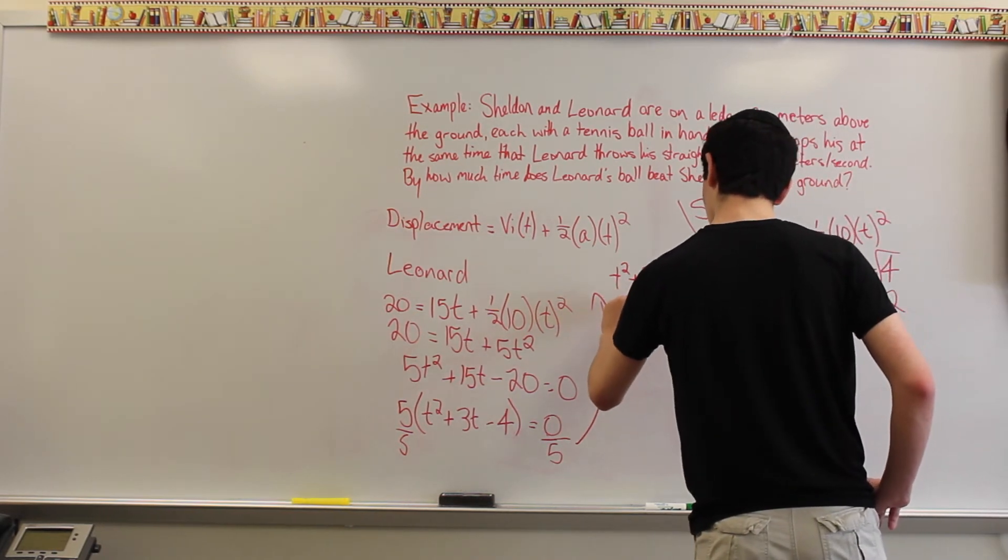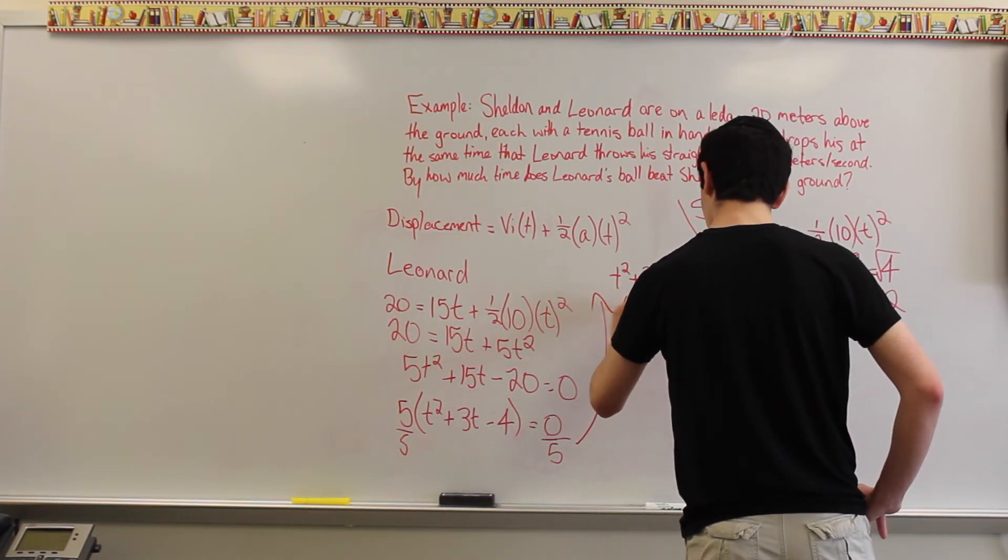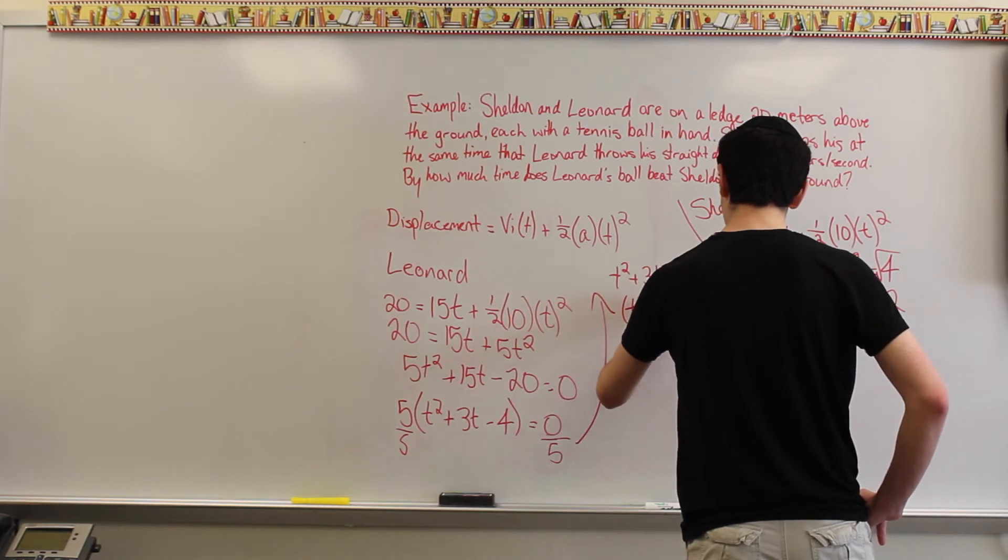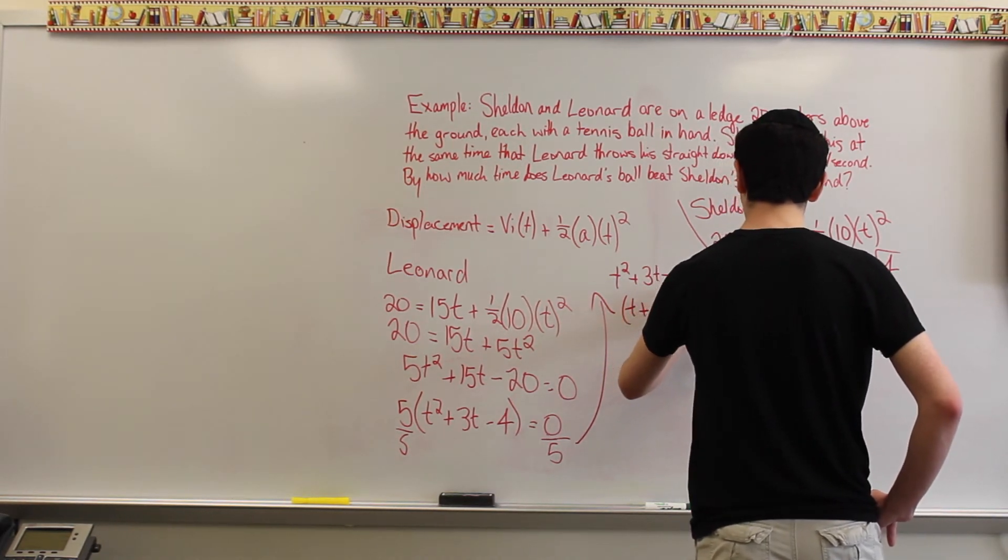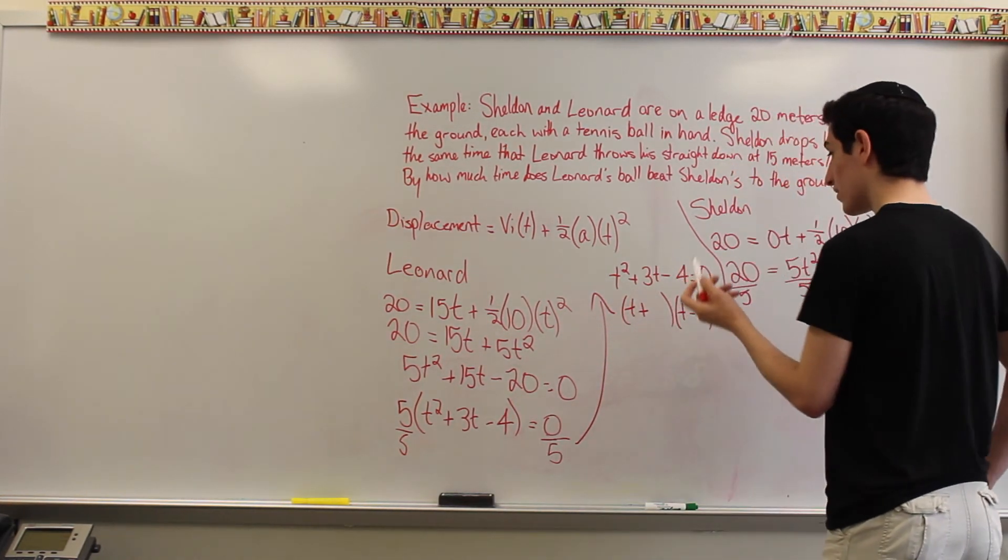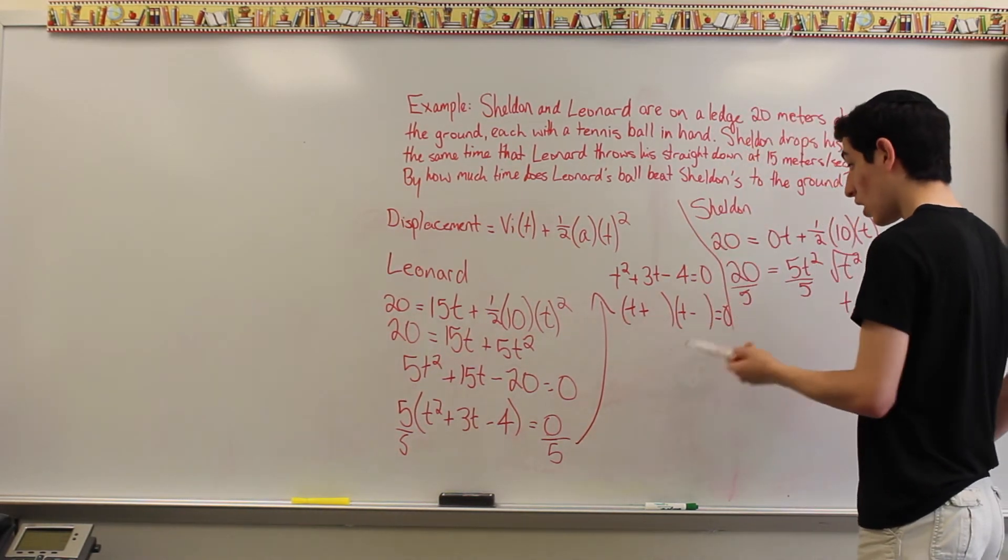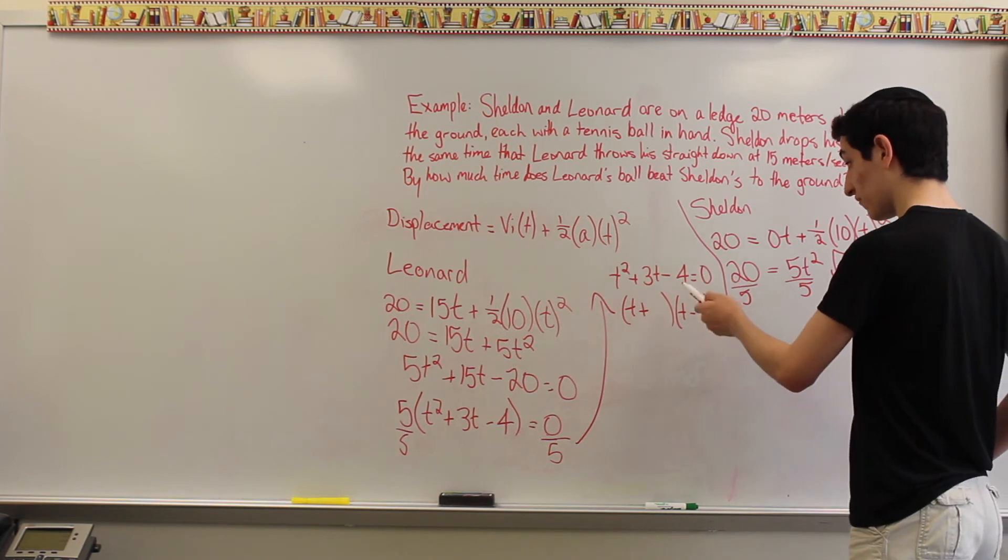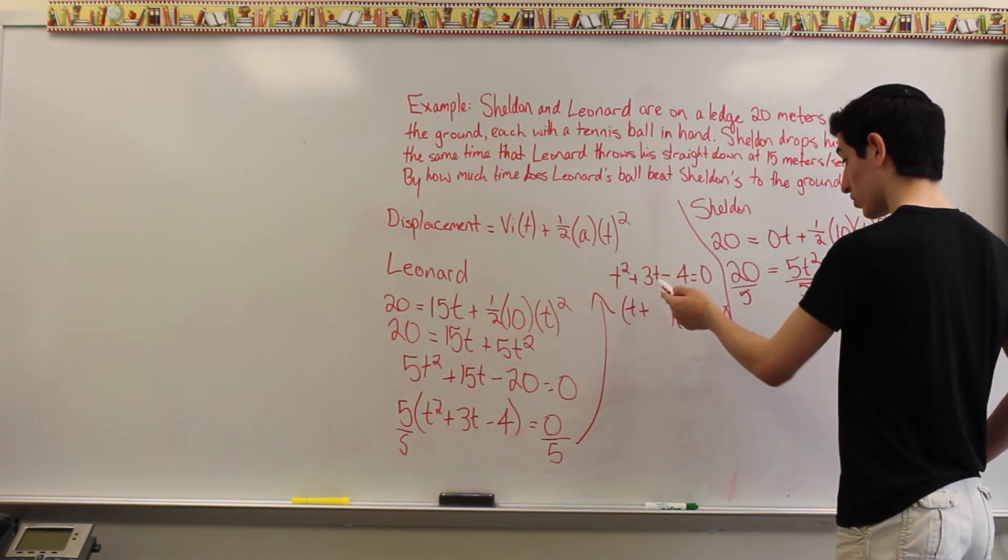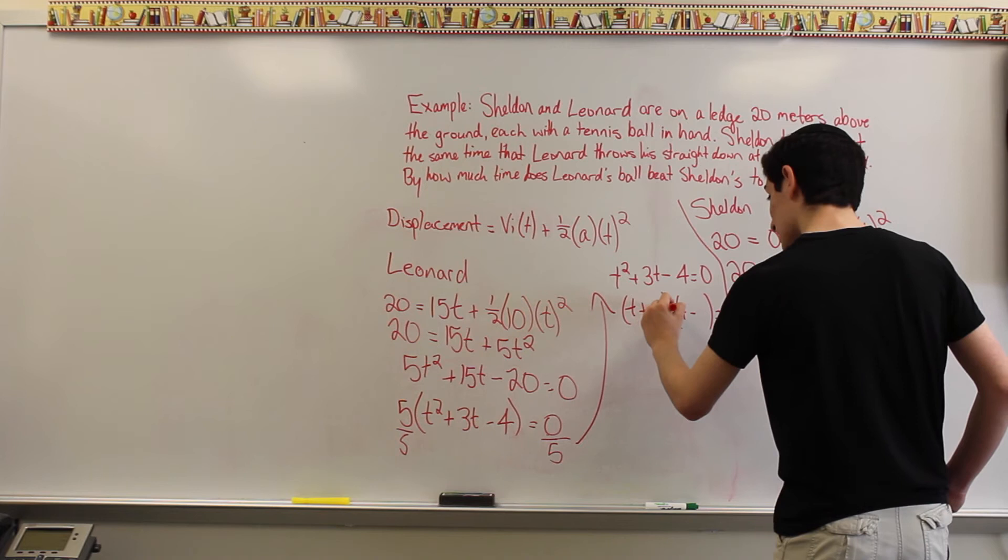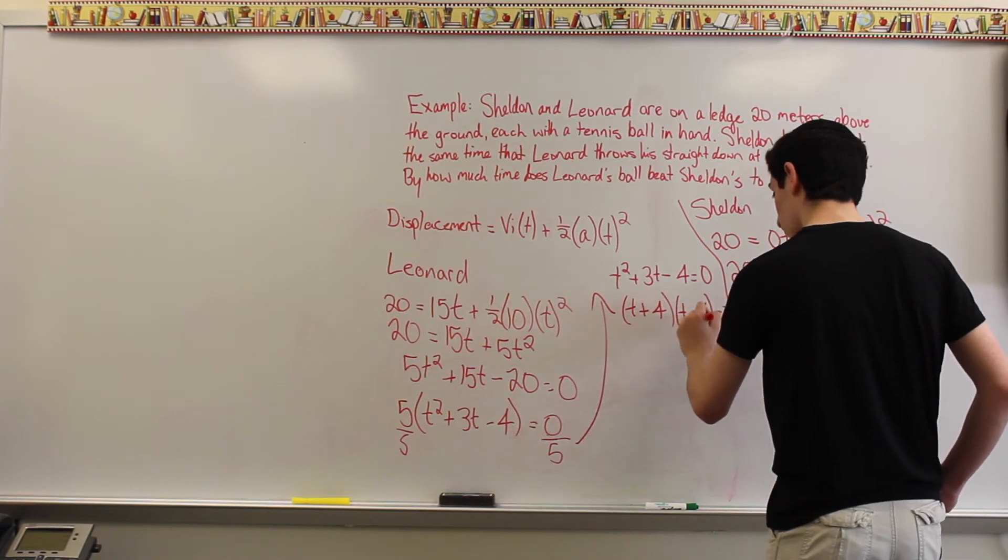So, we take it as t plus, t minus equals 0. And, we realize, then, that two factors, or two numbers, that can multiply to equal negative 4 and can add up to be 3 are positive 4 and negative 1.